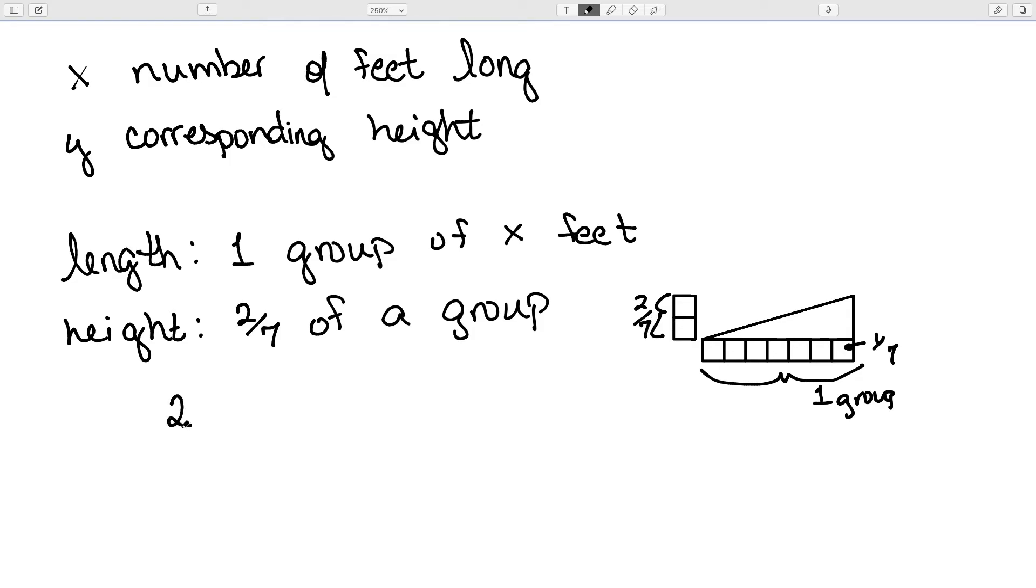So, it tells us that 2/7 groups of x feet give us a total height of y feet. So, I have my equation 2/7 x equal to y. So, our constant of proportionality tells us how many groups of the length of the ramp it takes to make the height of the ramp. It tells us the steepness of the ramp.